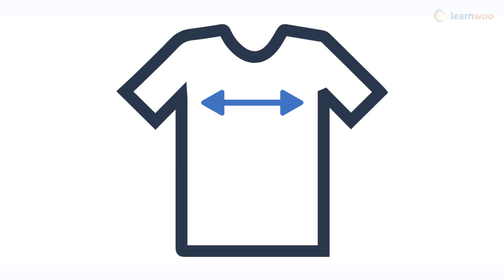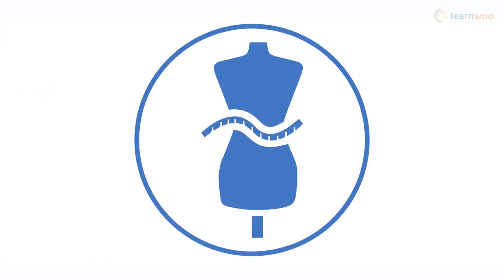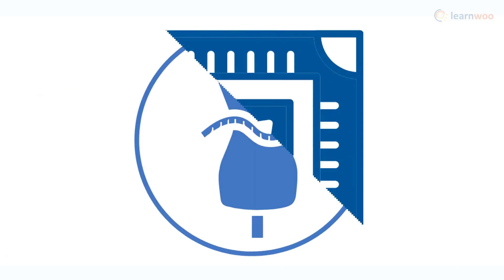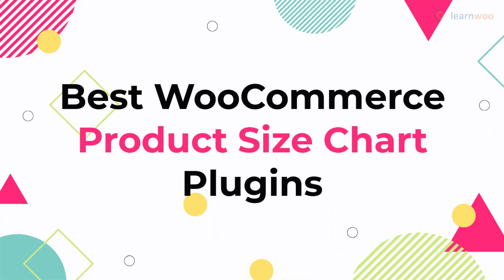If you are selling products based on size, a practical concern would be to let customers choose the right size. By displaying an accurate size chart on your product pages, you can manage this challenge effectively. In this video, we will discuss some of the best WooCommerce product size chart plugins you can install on your store.